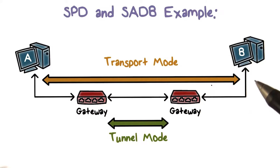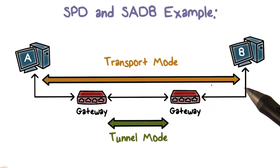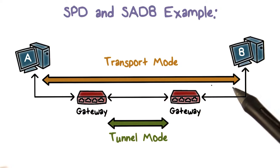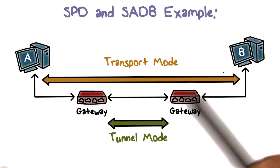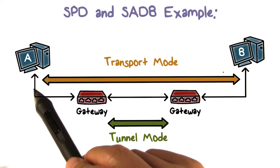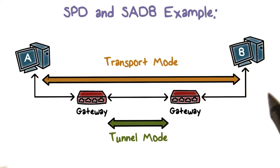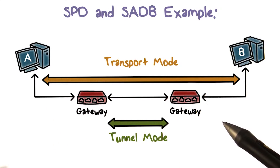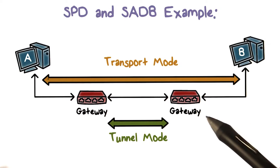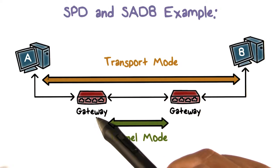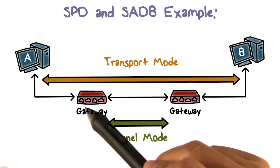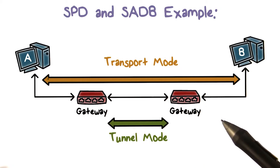Let's discuss an example of SPD and SADB. In transport mode, the traffic is protected end to end. Whereas in tunnel mode, the traffic is protected between the gateway of one network to the gateway of another network.